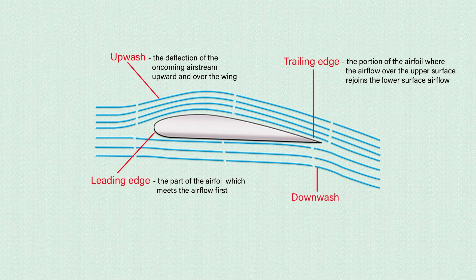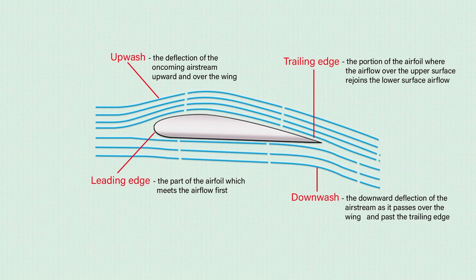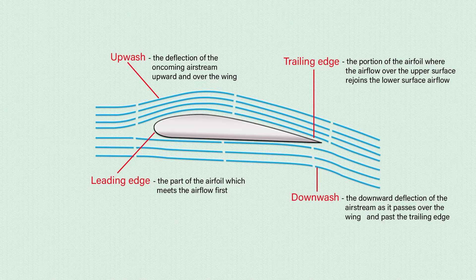The airfoils of some airplanes have more curvature on the top than on the bottom, but most helicopter rotors and many high-speed airplanes use airfoil sections that are symmetrical — that is, the curvature on the top of the airfoil is the same as that on the bottom. The movement of the air stream around the airfoil causes changes in the surrounding air pressure distribution to create lift.